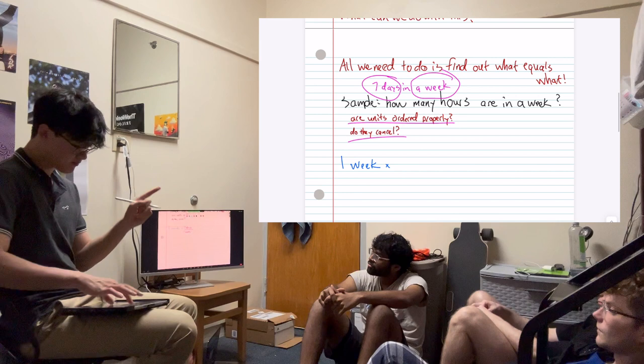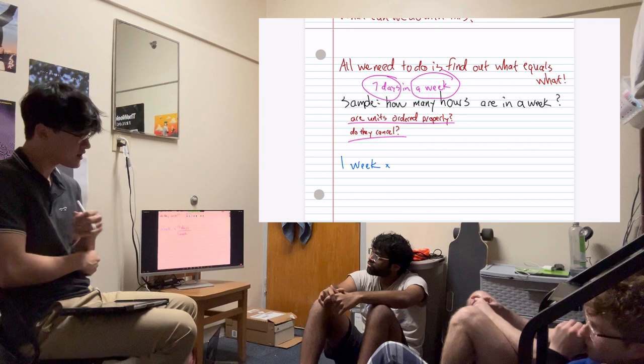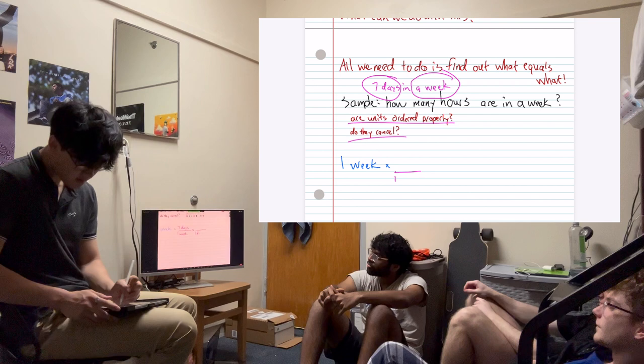And keep track of this, and at the end I'll explain. So Michael, how many... Let's go one unit below days. How many hours are in a day? 24. 24 hours in a day. And Noah, how many... Oh, sorry. That's where we have to stop.